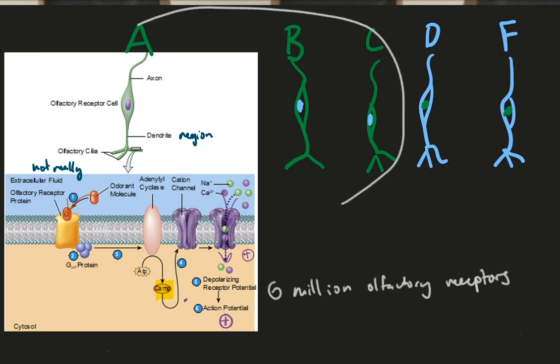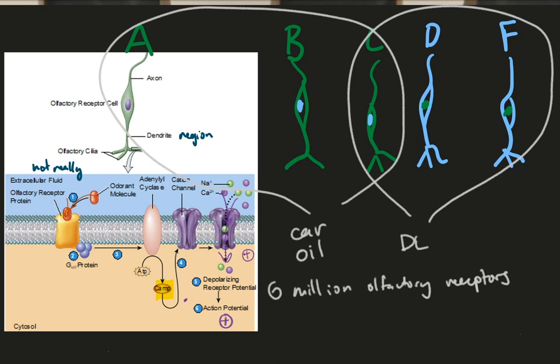For example, if your neighbor's fart stimulated receptor cells A, B, and C, the smell of car oil might arise. If receptor cells C, D, and F are stimulated, then the smell of rotten carcass might arise. Every combination of olfactory receptors stimulated will code for a unique smell, and that's why we as humans can discriminate between approximately one trillion different odors.